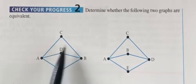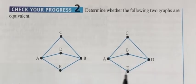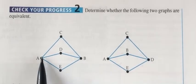So, 1, 2, 3, 4, 5, 6. 1, 2, 3, 4, 5, 6. Both have six vertices. So, I'm going to check.